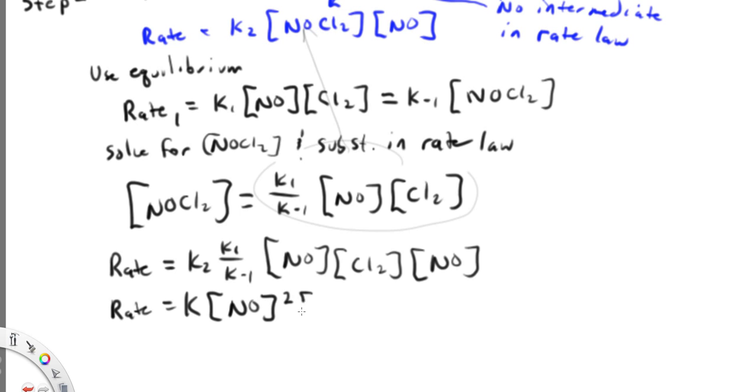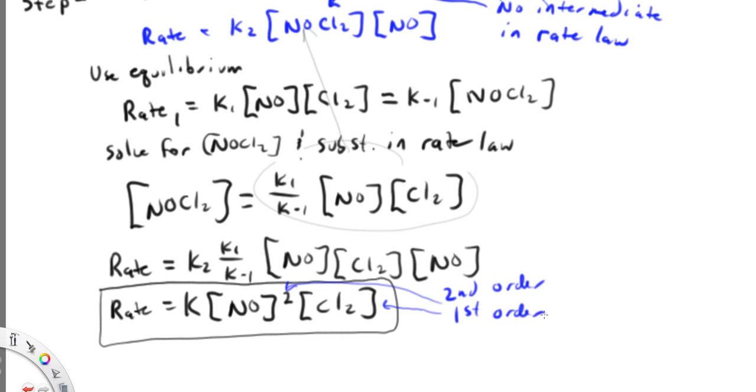So now I'm going to simplify this and say that the rate is equal to some big constant times NO squared times Cl2. So that is now my rate law for this overall reaction. You can see that this is second order with respect to nitrogen monoxide and with respect to chlorine it's first order and overall it's third order.